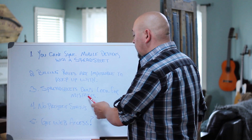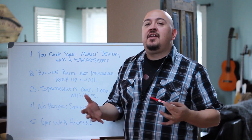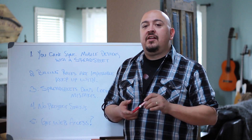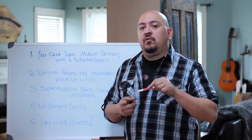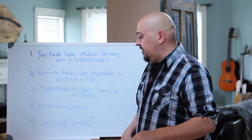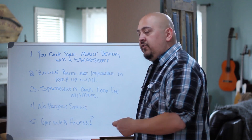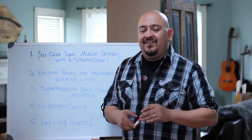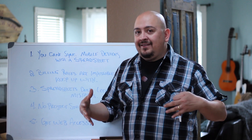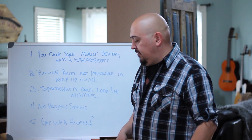Spreadsheets don't look for mistakes — that's because it's not a timesheet. Standard Time is a real timesheet and it's made to look for those mistakes. No project status? A spreadsheet won't give you charts and graphs and tell you where you're at. Standard Time does.